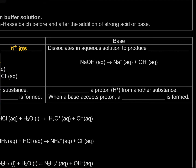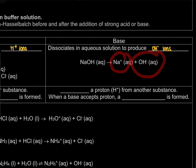For the base, the Arrhenius theory states that a base is a species that dissociates in aqueous solution to produce OH⁻ ions. As we can see, sodium hydroxide will dissociate to form Na⁺ and OH⁻ ions. However, not all bases behave this way — for example, ammonia is a base but when it dissociates, we don't see it producing OH⁻ ions. So there's another theory we need to consider.